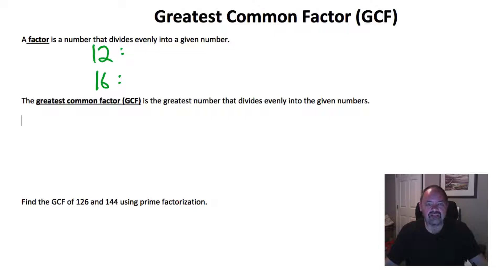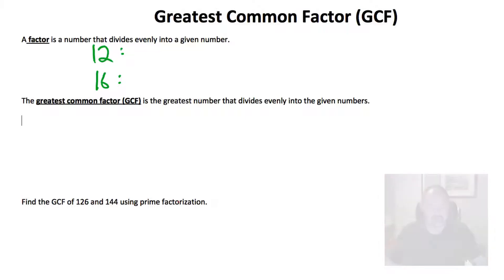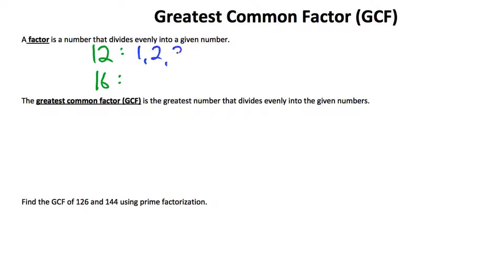A factor is just a number that divides evenly into a given number. So if I have 12, I can think about the factors of 12 — the numbers that divide into 12 — and list them. That would be 1, 2, 3, 4, 6, and 12.